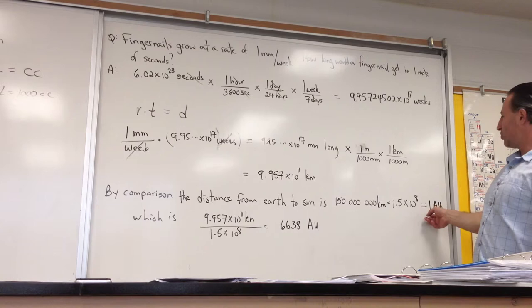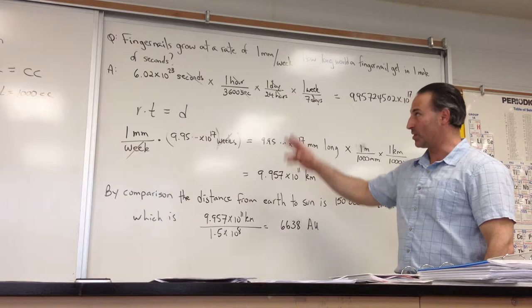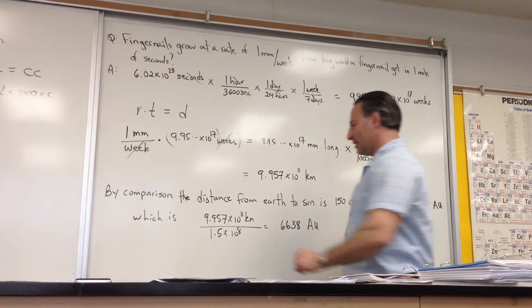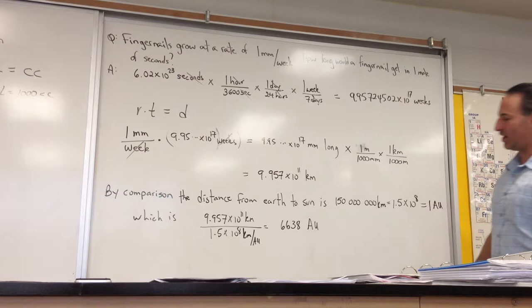In one mole of seconds, your fingernail will have grown, if it's growing at one millimeter per week, that many kilometers. Divided by that many kilometers per astronomical unit, this gives you 6,638 astronomical units.